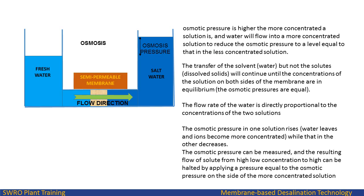Osmotic pressure is higher the more concentrated a solution is, and water will flow into a more concentrated solution to reduce the osmotic pressure to a level equal to that in the less concentrated solution. The transfer of the solvent, but not the solutes, will continue until the concentrations of the solution on both sides of the membrane are in equilibrium and the osmotic pressures are equal. The flow rate of the water is directly proportional to the concentrations of the two solutions.